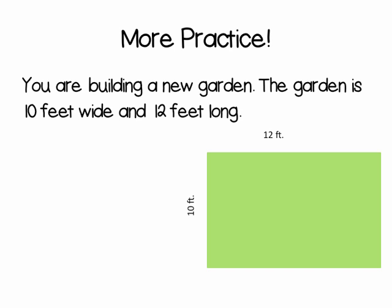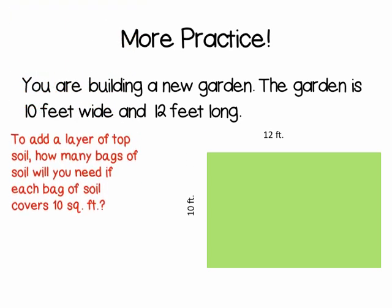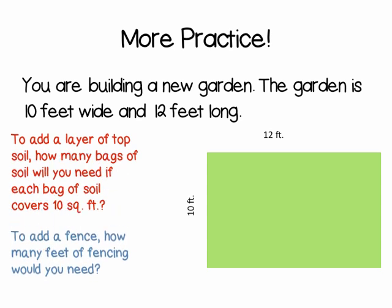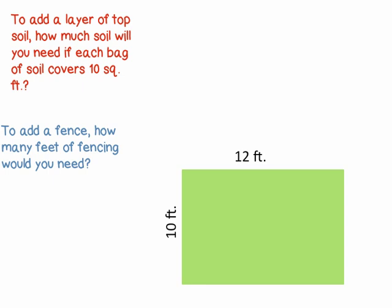Let's try another one. We are going to build a new garden. The garden is 10 feet wide and 12 feet long. To add a layer of topsoil to our garden, how many bags of soil will you need if each bag of soil covers 10 square feet? Here we are going to be dealing with area because we want to know how much space is on the top of the garden. So, area equals length times width — our length is 10 feet and our width is 12 feet. Area equals 10 times 12, or 120 square feet.